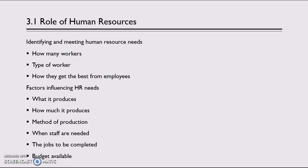Each function always starts with the role of. The role of Human Resources covers three areas: they have to identify how many workers the business needs, the type of worker — whether full-time, part-time, skilled, unskilled, qualified, level of training — and they also have to work out how they can get the best from their employees.